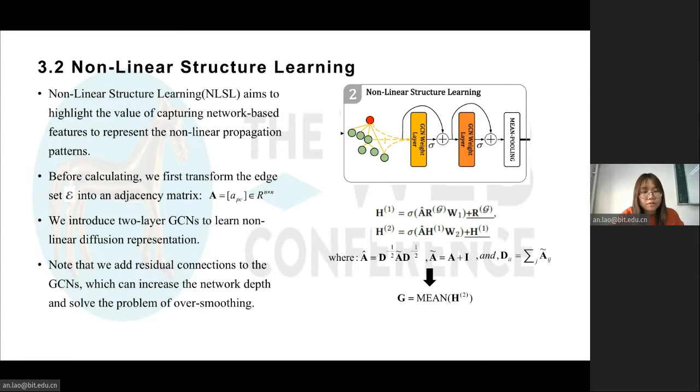Before calculating, we first transform the edge set into an adjacency matrix. If A_pc equals 1, it means node c has a response to node p. Otherwise, A_pc equals 0. And if A_pc equals 1, then A_cp equals 1 too. So the adjacency matrix contains the path of rumor propagation tree from top to down, and vice versa.